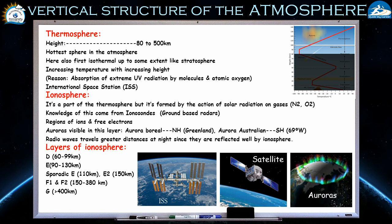The thermosphere can also be called the ionosphere. The ionosphere is part of the thermosphere, formed by the action of solar radiation on gases like nitrogen and oxygen through ionization — a process where ions and free electrons are created. Knowledge about the ionosphere is obtained from ionosondes, which are ground-based radar instruments that provide information about this layer.